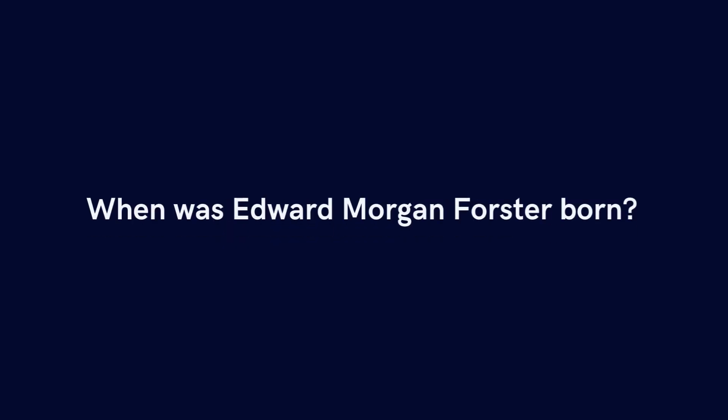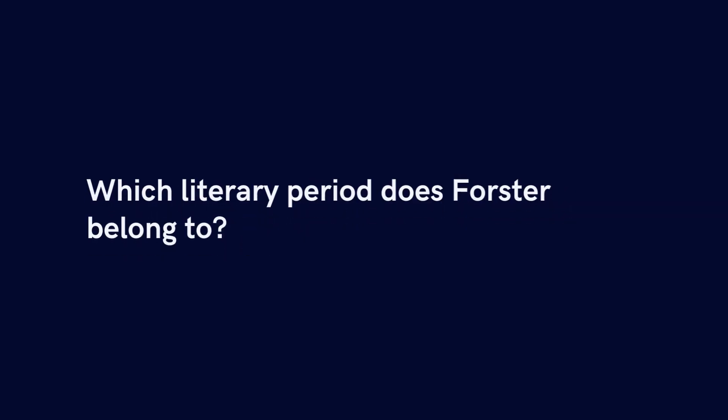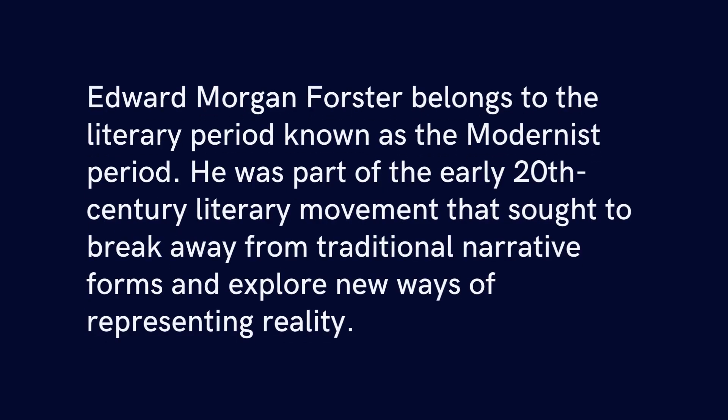Edward Morgan Forster was born on 1st January 1879. He belongs to the literary period known as the Modernist Period, and was part of the early 20th century literary movement that sought to break away from traditional narrative forms and explore new ways of representing reality.